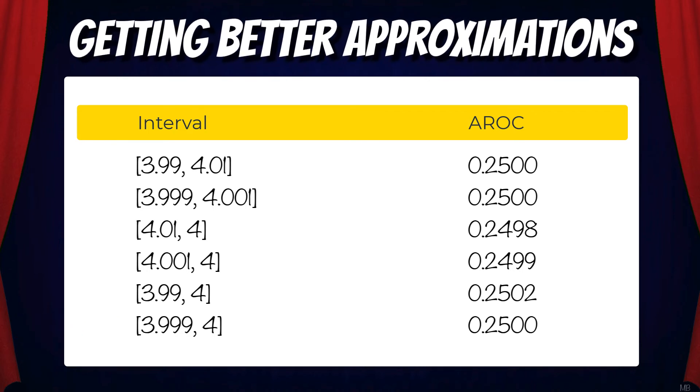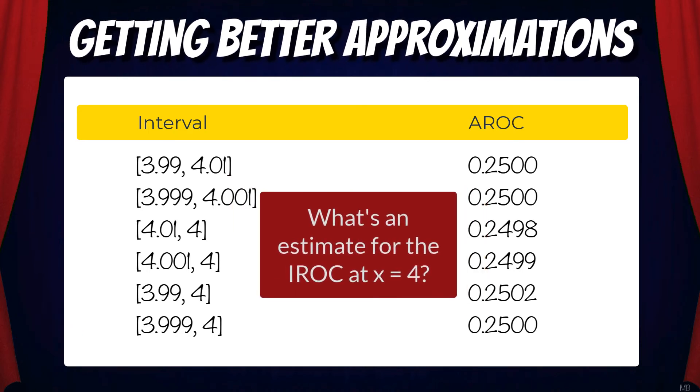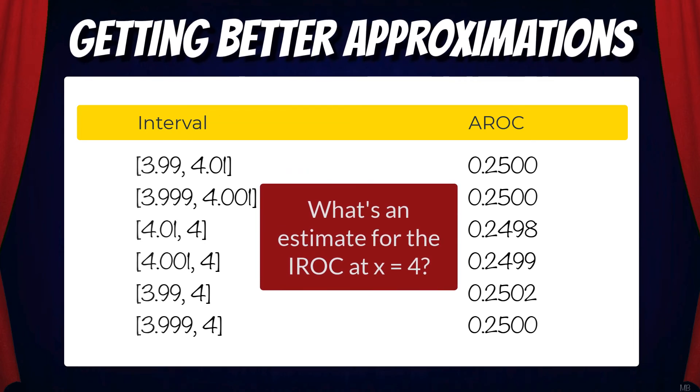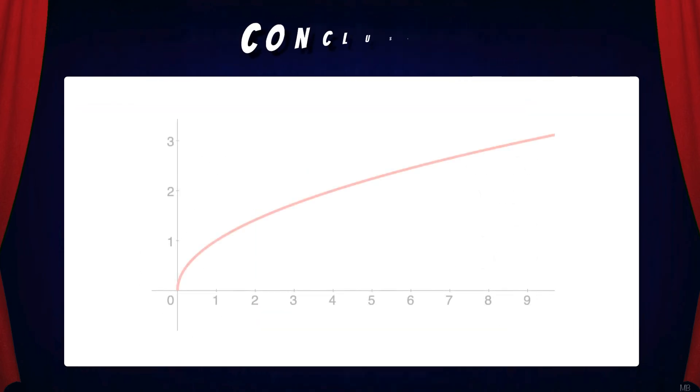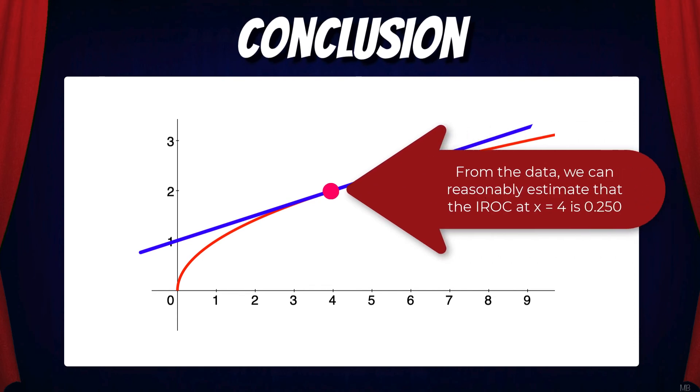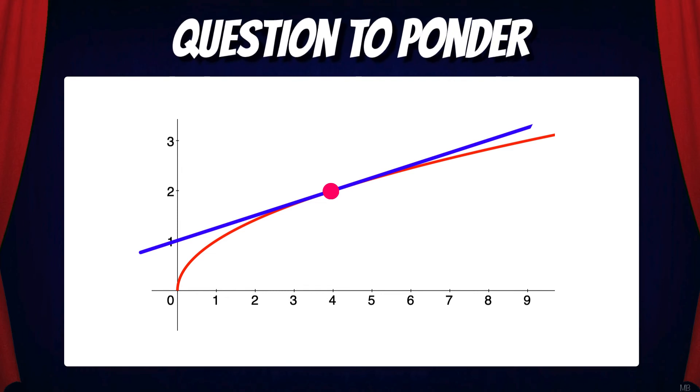Now, from the list of AROC data, can you make an estimate for what the instantaneous rate of change is at x equals 4? From the data, we can reasonably estimate that the IROC at x equals 4 is 0.250.